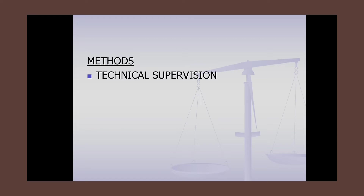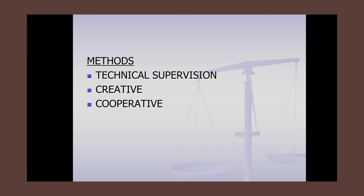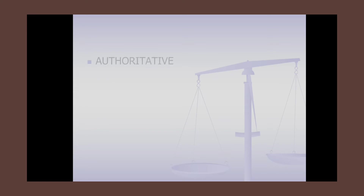Technical supervision involves checking or supervising the performance of a skill. Creative supervision focuses on the creativity and innovations of subordinates in performing tasks. The cooperative method involves both supervisor and subordinate participating in the supervision process. The authoritative method involves some supervisors acting in an autocratic manner in evaluating subordinates.